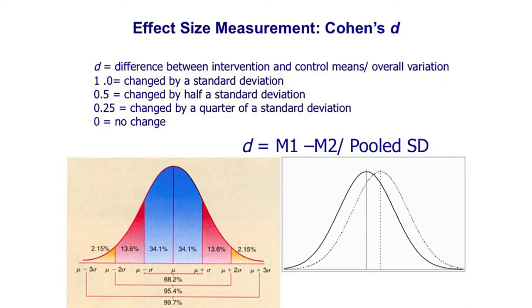Once we've decided on our measures and taken measurements of whatever it is we hope to change, there's a question of how we assess the size of change — by how much has the thing changed. One way of measuring this is Cohen's d; there are other methods, but this is quite a common way in which outcome evaluations assess the size of change. If you look at the graph on the left of this slide, this is called a normal distribution. Many outcomes we want to measure are not necessarily distributed in this normal way, but some are — for example, women's heights are distributed in this way. If we make the assumption that our outcome measure is normally distributed, it would look like this graph.